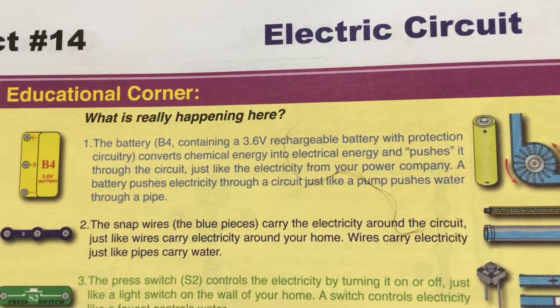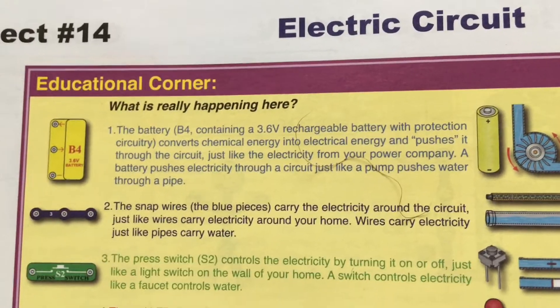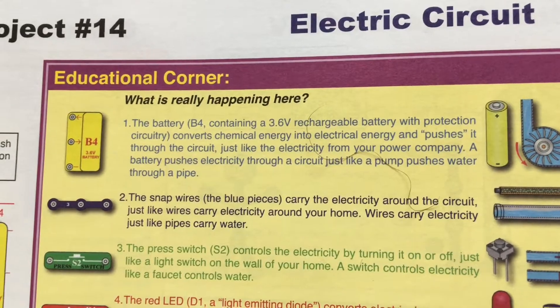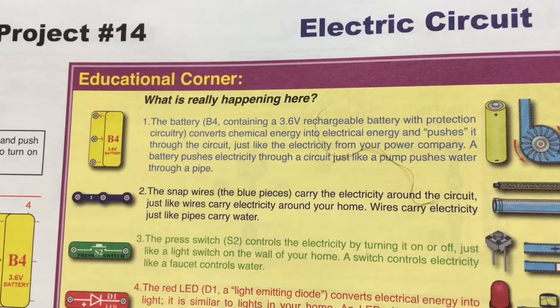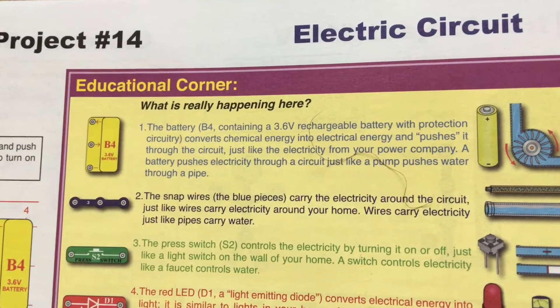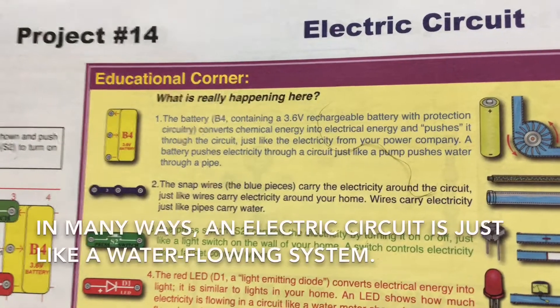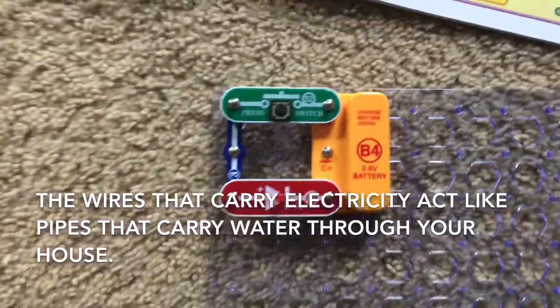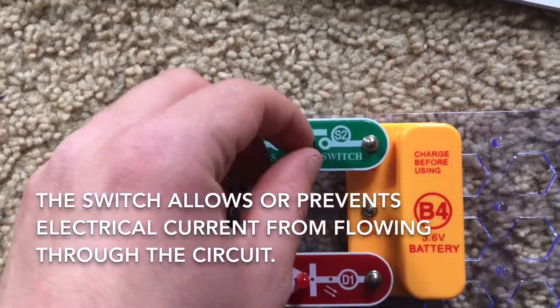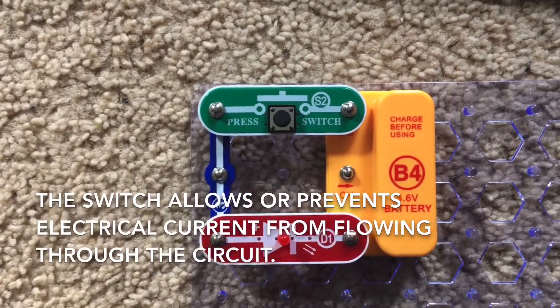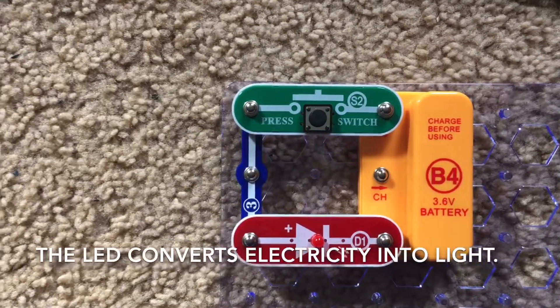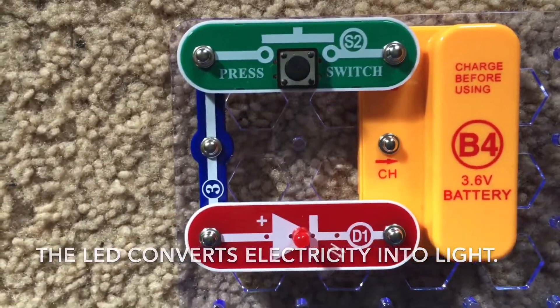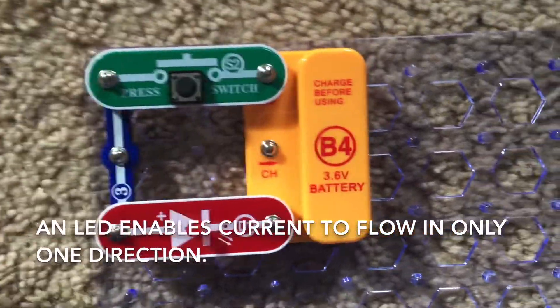The battery has protection circuitry in order to protect it from high amounts of current and it converts chemical energy into electrical energy and pushes it through the circuit. And then a battery pushes electricity through a circuit just like a pump pushes water through a pipe. Now the snap wires or solid wires carry electricity through just like the wiring in your home. The switch allows you to connect or disconnect the circuit and turn electrical components on or off. And then the red LED converts electricity into light.